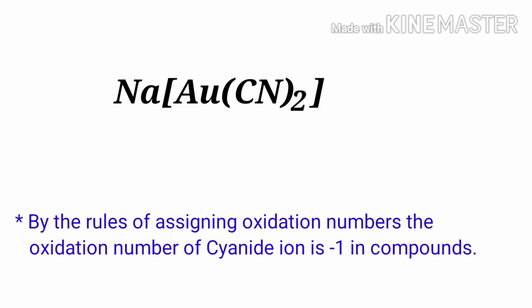By the rules of assigning oxidation numbers, the oxidation number of the cyanide ion is minus one in compounds, since carbon has an oxidation number of plus two and nitrogen has an oxidation number of minus three.